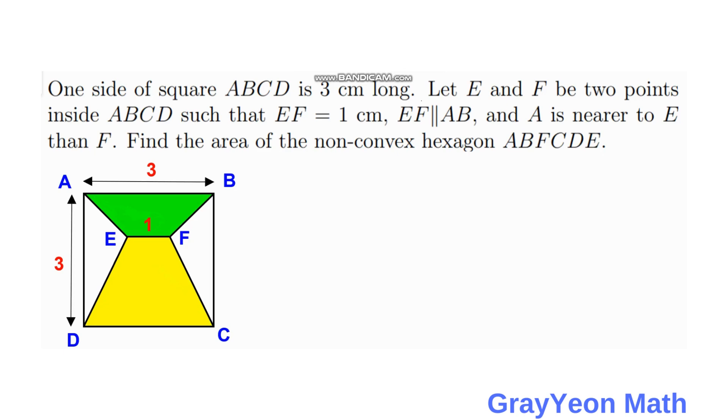Welcome to Gradient Math. If you are asked to solve this problem: one side of square ABCD is 3 cm long. Let E and F be two points inside ABCD such that EF is equal to 1 cm.